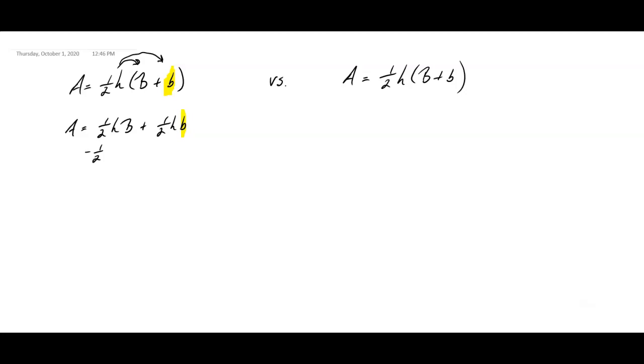So now I'm going to go ahead and subtract the one-half h big B from both sides of the equation. This gives me zero, and on the left-hand side, I get A minus one-half h big B is equal to one-half h little b.